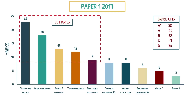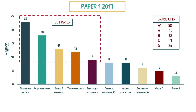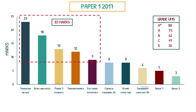Let's break down what this chart is showing us. I'm going to go through every single paper, from paper one 2017 all the way to 2022, and then summarize at the end. On the x-axis we have all the topics present in the paper, and on the y-axis we have the marks. For example, transition metals was allocated 23 marks out of a potential 105 total marks for this paper.